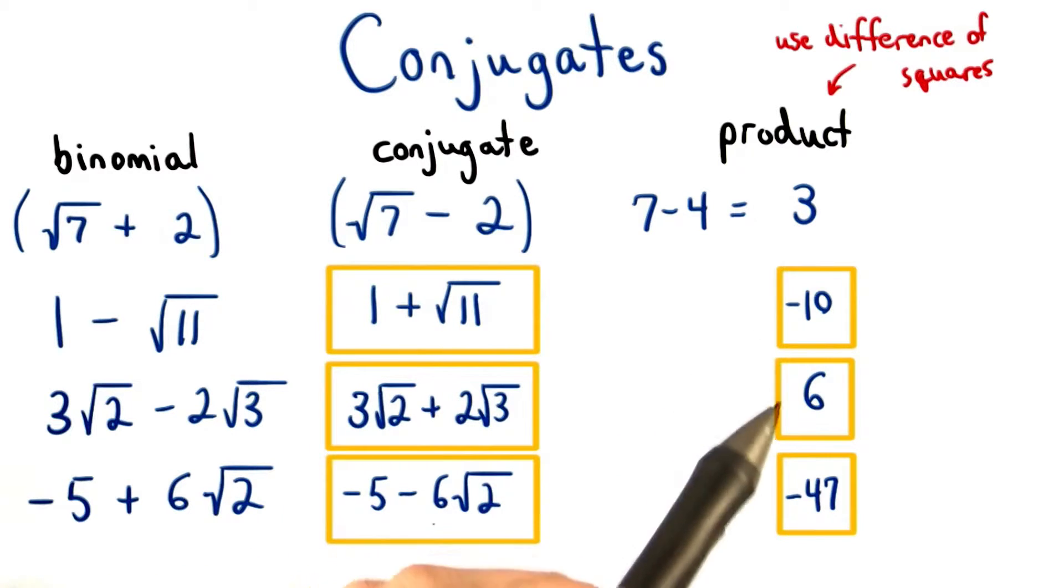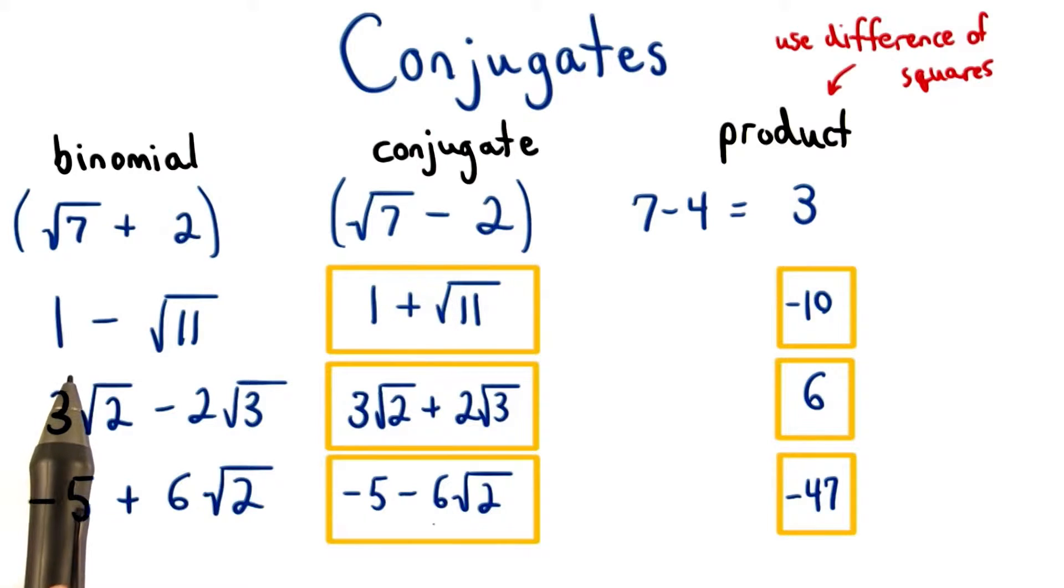Here are the conjugates, and here are the products. Great work if you found at least four of those. We know for the conjugate, we just changed the sign between the two terms.